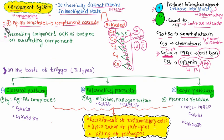The preceding complement component acts as an enzyme on the succeeding component. On the basis of the trigger - whether antigen-antibody complexes or microbes or pathogens activate the complement pathway - there are three types of pathways in the complement system.